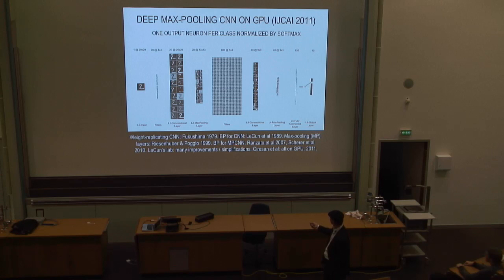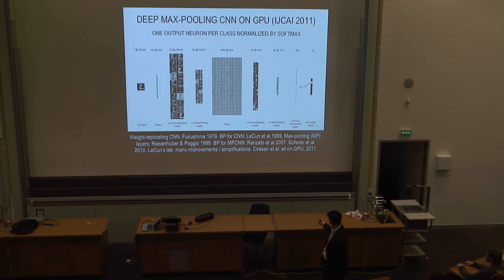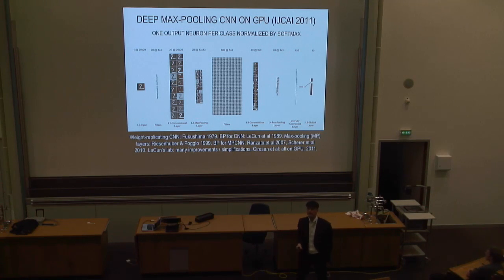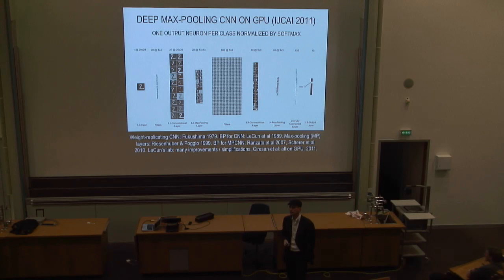The first to backpropagate through a max-pooling CNN was Ranzato and colleagues in 2007, which showed this is really a good idea. LeCun's lab had lots of improvements and simplifications of convolutional neural networks of this type.